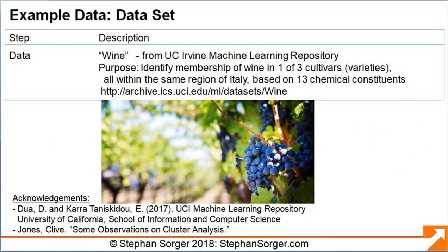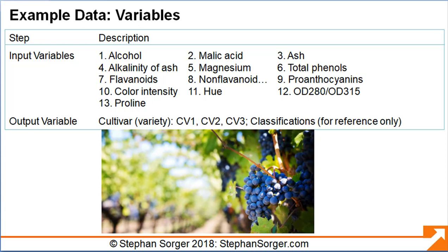For our example data set, we selected the wine data set from the UC Irvine Machine Learning Repository. The stated purpose of the data set is to identify membership of wine in one of three cultivars, or varieties, all within the same region of Italy, based on 13 chemical constituents. The 13 variables include alcohol content, malic acid content, and so forth. The data also includes the cultivar, or CV, where the data was sourced, including CV1, CV2, and CV3.